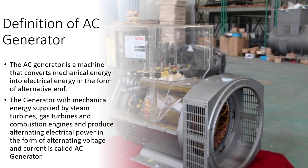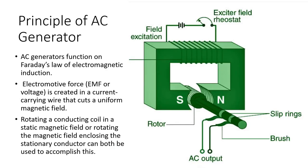The principle of AC Generator: AC Generators function on Faraday's Law of Electromagnetic Induction. Electromotive force, EMF or voltage, is created in a current-carrying wire that cuts a uniform magnetic field. Rotating a conducting coil in a static magnetic field, or rotating the magnetic field around a stationary conductor, can both be used to accomplish this.